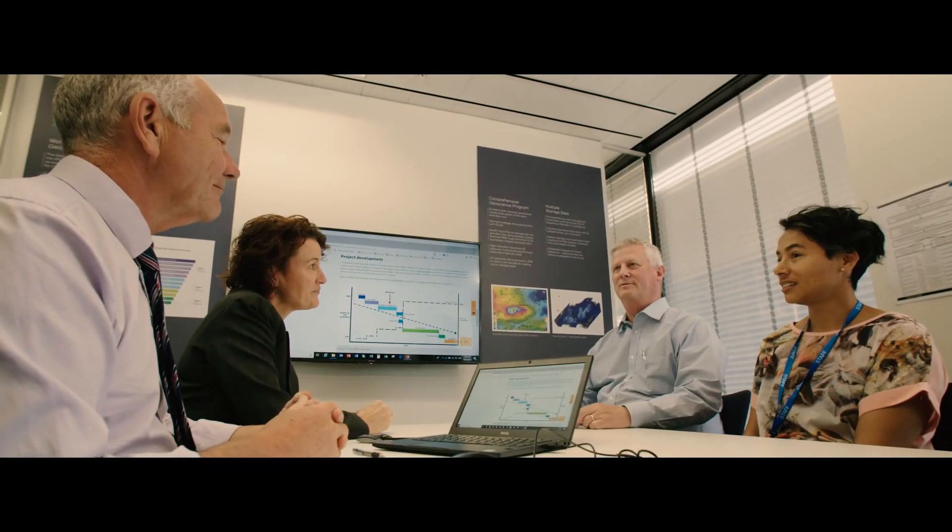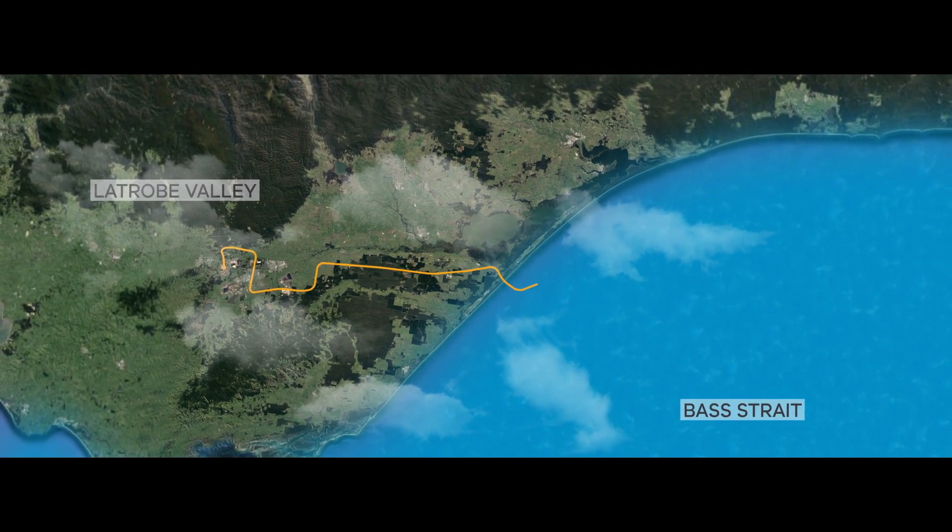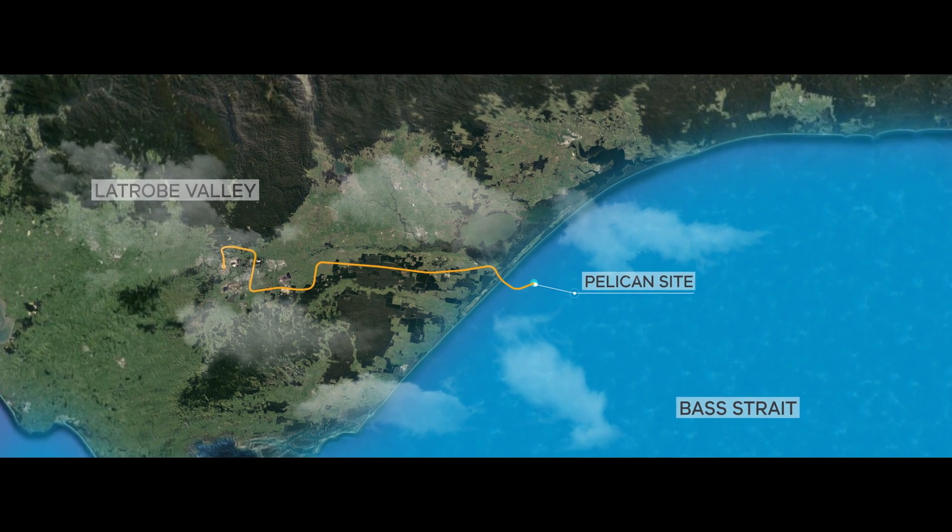CarbonNet has undertaken extensive studies of potential CO2 storage sites, including the Pelican site offshore from Gippsland.